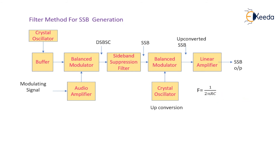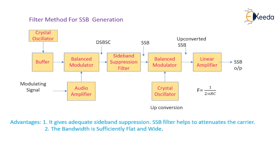This method has several advantages and disadvantages. The first advantage is that it gives adequate sideband suppression — the SSB filter helps to attenuate the carrier, and the bandwidth is sufficiently flat and wide.